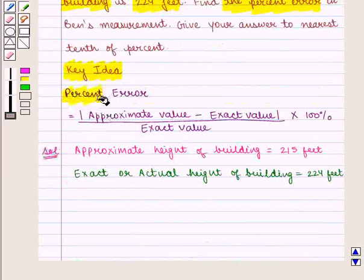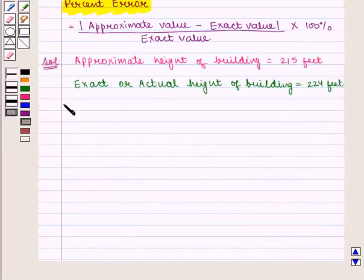Percent error is given by the modulus of approximate value minus exact value, divided by exact value, times 100%. So percent error will be given by this formula.